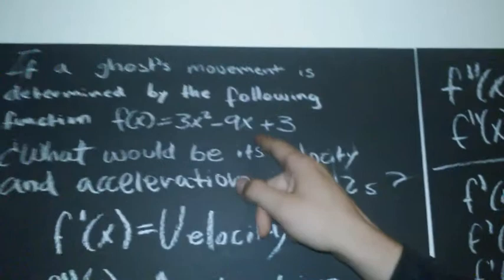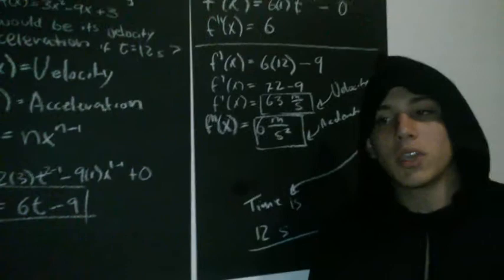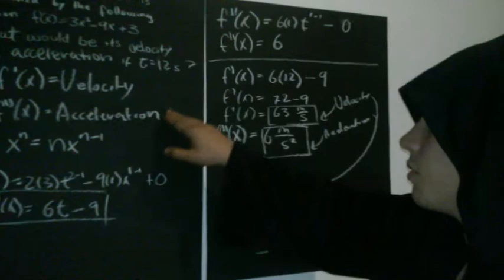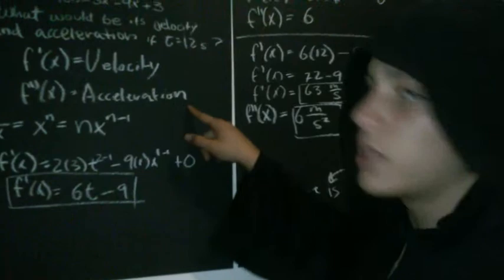what would be its velocity and acceleration if time equals 12? This is one of the daily life problems we can solve using derivatives. So, to get the velocity and acceleration, we have to derivate the function and then get the second derivative. The first derivative will be velocity, and the second derivative will be acceleration. Acceleration is the derivative of velocity.